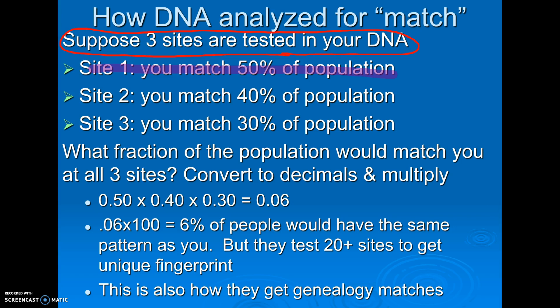So what they might do is test around 20 different sites. I have a sample here testing just three cut sites. They would have on file what percent of the population — based on thousands, millions of people — would have a particular pattern. So let's say at site one you match 50% of the population, at cut site two 40%, and at cut site three 30%.